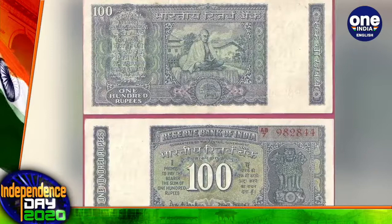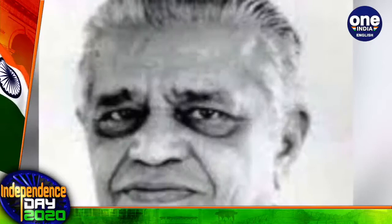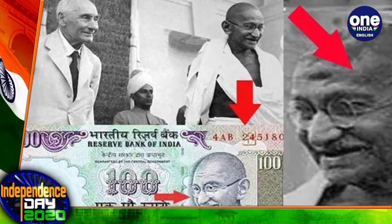When Gandhiji's picture appeared on the note for the first time, Indira Gandhi was the Prime Minister of the country and LK Jha was the Governor of RBI. This picture was taken when Mahatma Gandhi and Frederick Pethick Lawrence, working as British Secretary in India, met at the Viceroy's house in Kolkata.